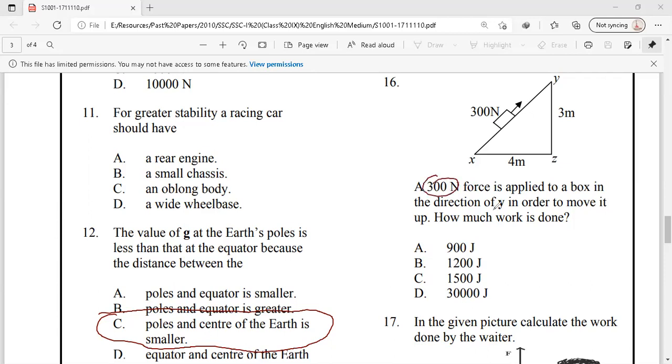Question number 16. A force of 300 newtons applied on a box in the direction. How much work is done on it? First, we find side xy. It is 90 degree. So xy will be equal to 4 square plus 3 square, that will be equal to 5. So the displacement is 5. Work done is equal to force times displacement. So the force is 300 and the displacement is 5. So the work done is 1500 joules. Option C, 1500 joules.